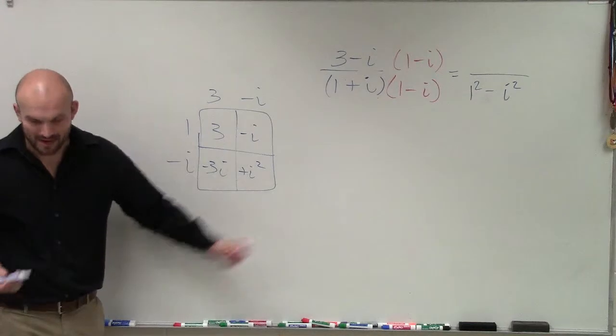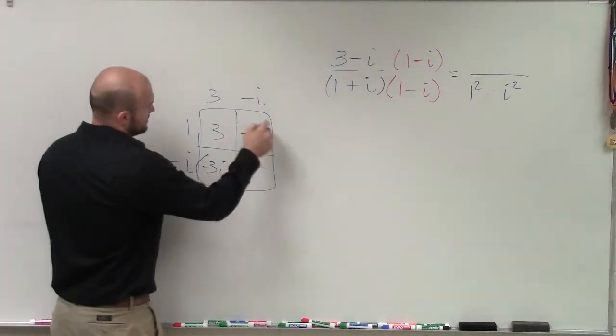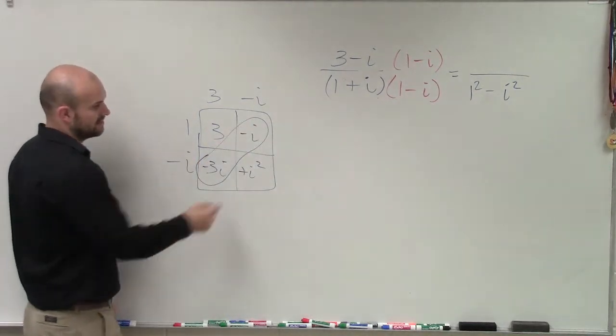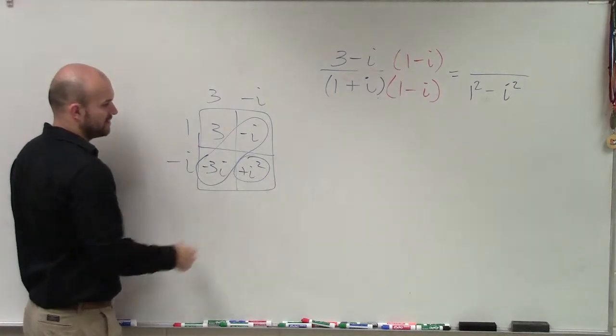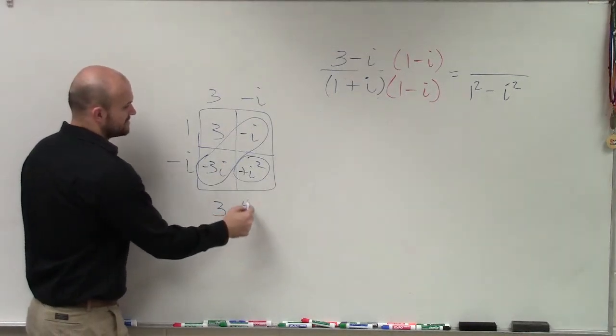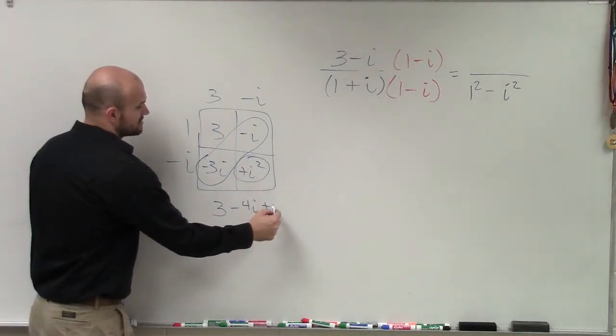So therefore, rather than rewriting them out, I notice that those are both i's. And that is a negative one. So I have three minus four i plus negative one.